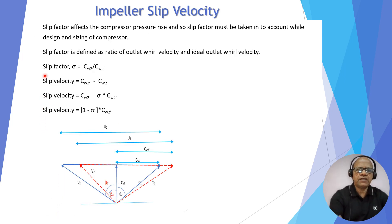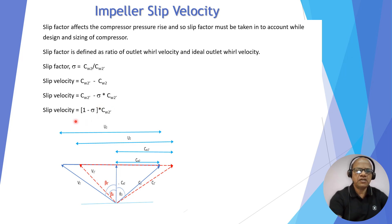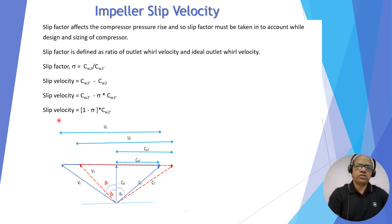By definition, the slip factor σ equals cw2 divided by cw2-dash. The slip velocity is defined as cw2-dash minus cw2. We can replace cw2 with σ·cw2-dash, so the slip velocity equals (1 − σ)·cw2-dash. This is the slip velocity.